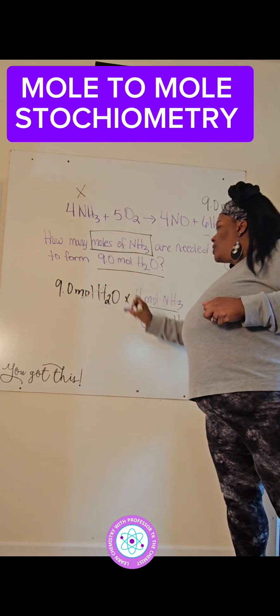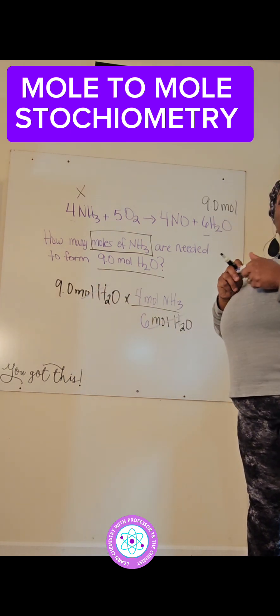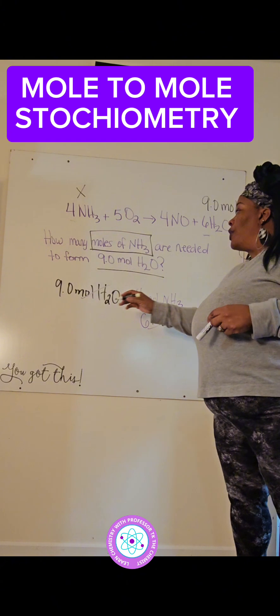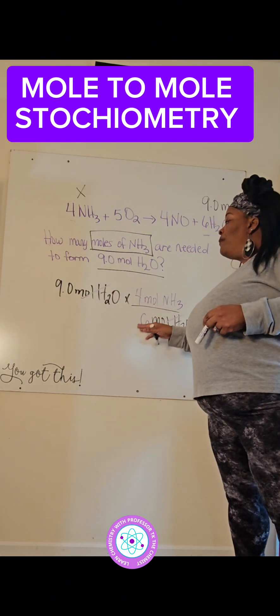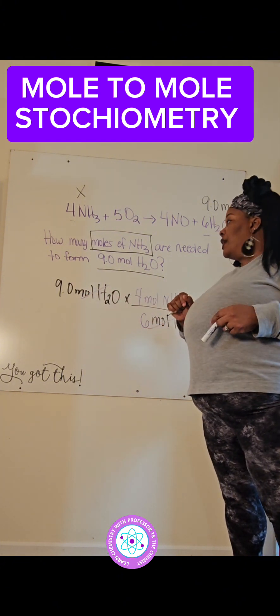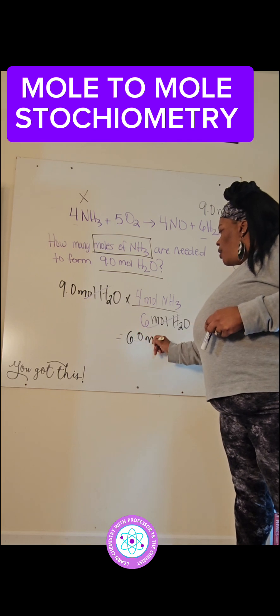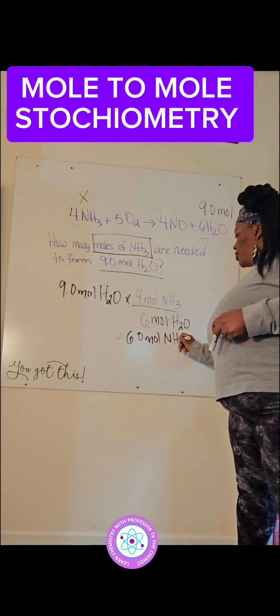Now we're going to cancel out our moles of H2O because we no longer need that. We're going to multiply 9 times 4, which is 36, divide that by 6, and you get 6.0 moles of NH3.